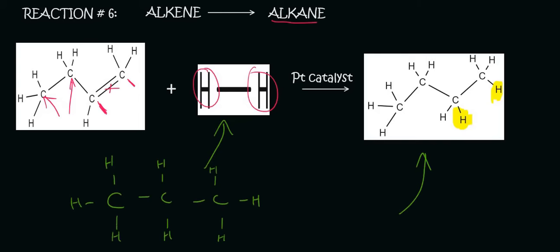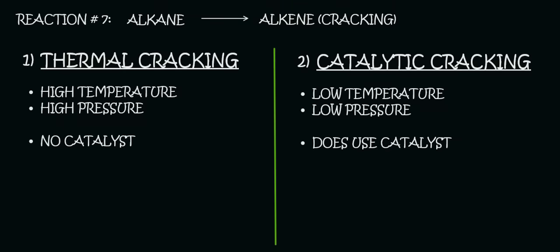So let's go on to reaction number seven. Reaction seven is when you take an alkane and turn it into an alkene. In industry, they call this cracking. Now, there are two main ways that this can be done. This is just theory you might be asked in the exam. I highly doubt it, but just for your own information, you could either do this like this.